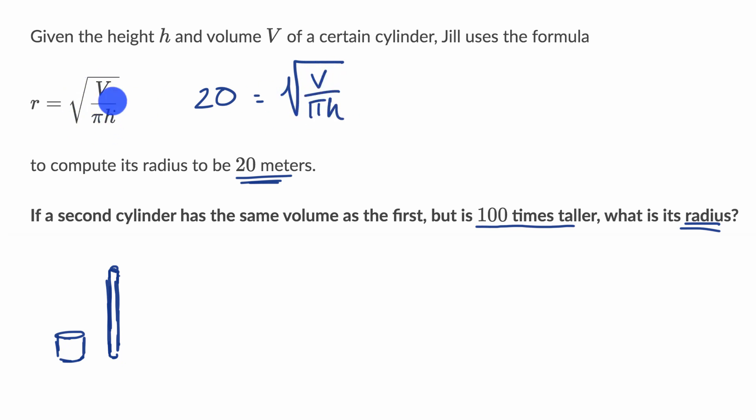If this formula looks unfamiliar to you, just remember the volume of a cylinder is the area of one of the top or bottom, so pi r squared times the height. If you solve this for r, you would have this exact formula that Jill uses. This isn't some new formula; this is probably something you've seen already.